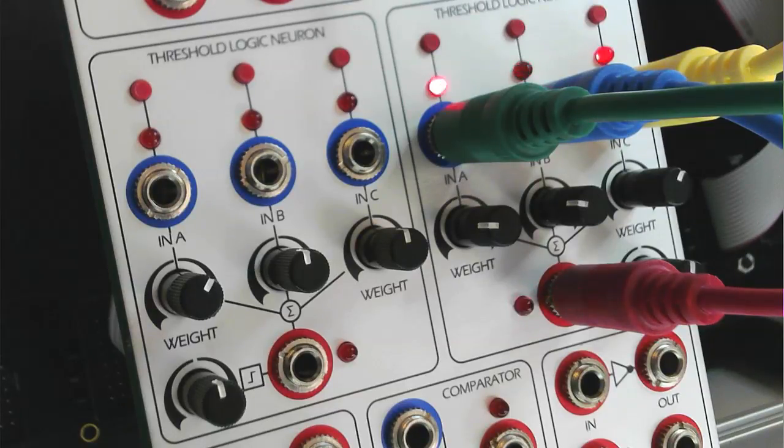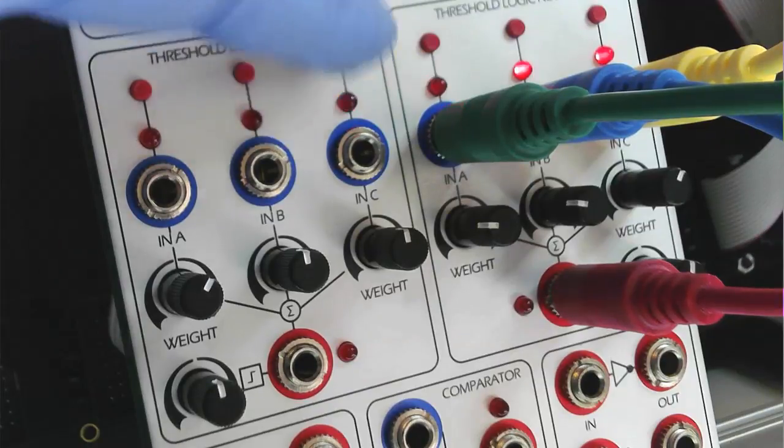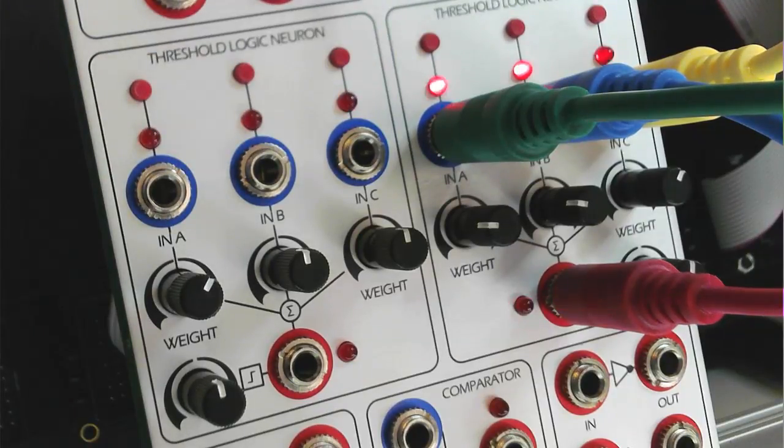Each input channel of the neuron features a manual push button that gates plus 5 volts to the associated input. Inputs also have separate LED indicators.